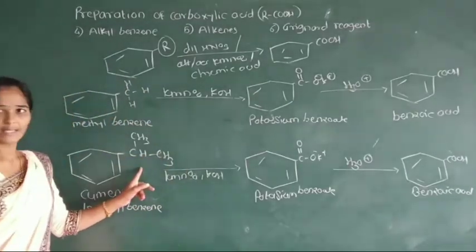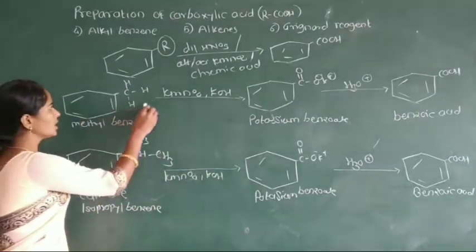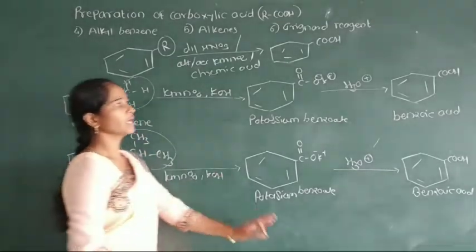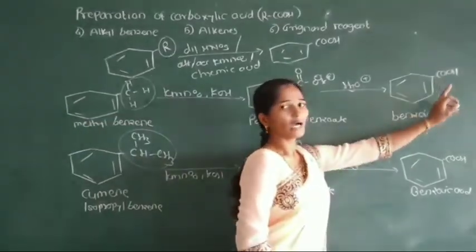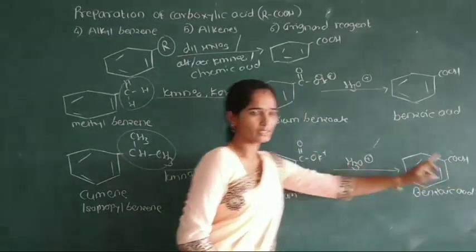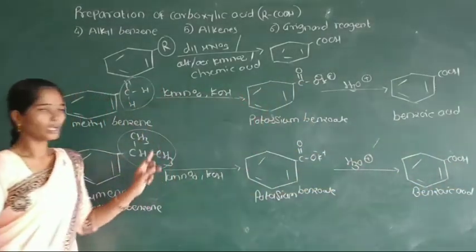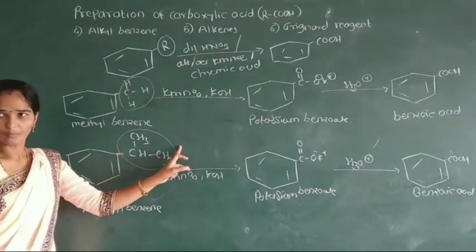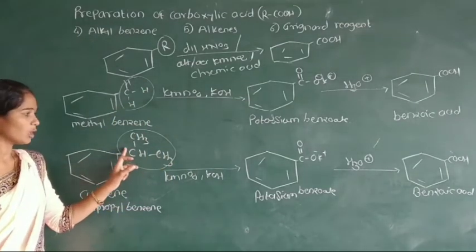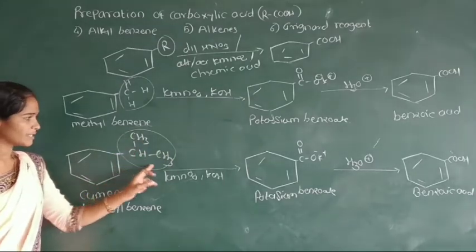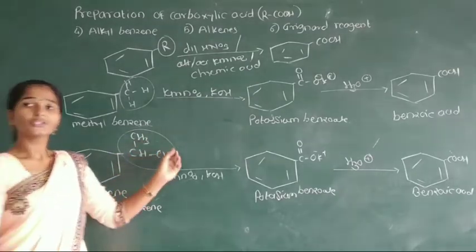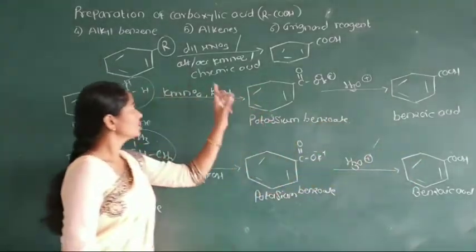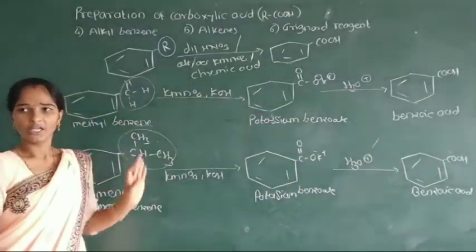In the first and second examples, the entire alkyl group — the entire alkyl group — is converted into the carboxyl group. That means, in the alkyl benzene, the entire length of the side chain of the alkyl group, the whole length of the section of alkyl group, is converted into the carbonyl group by using different oxidizing agents.